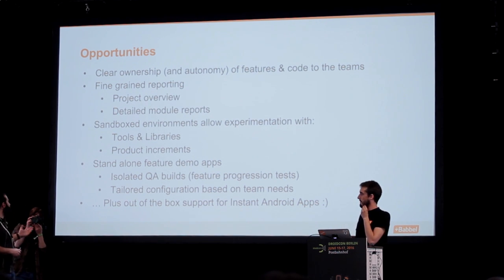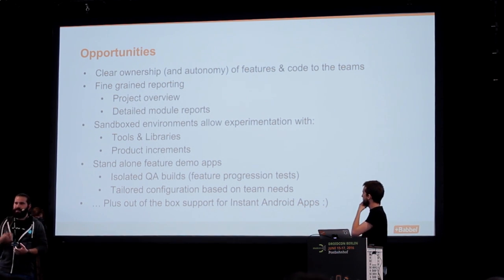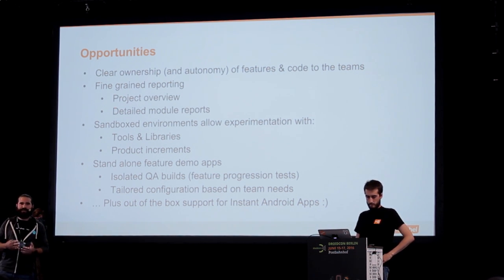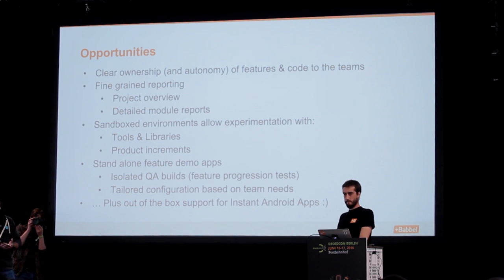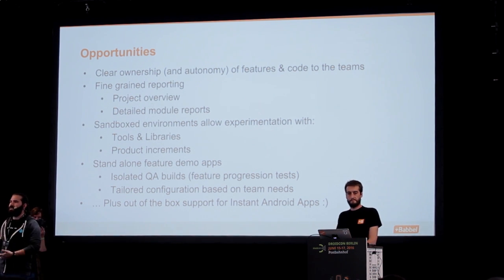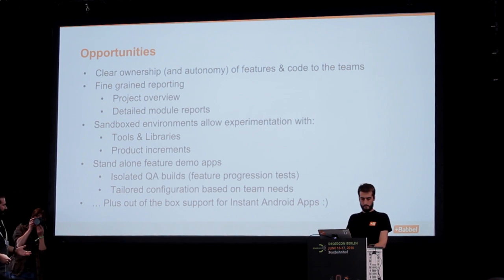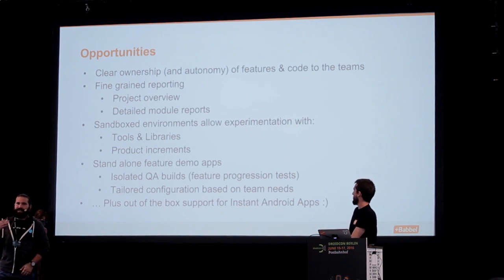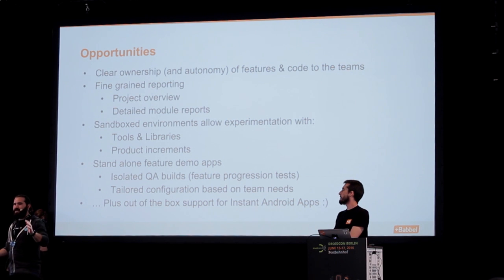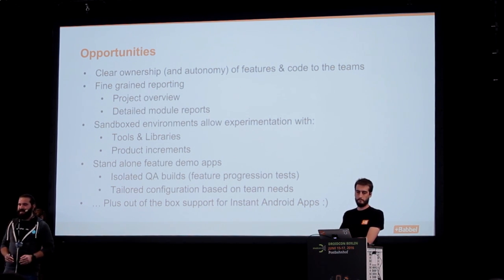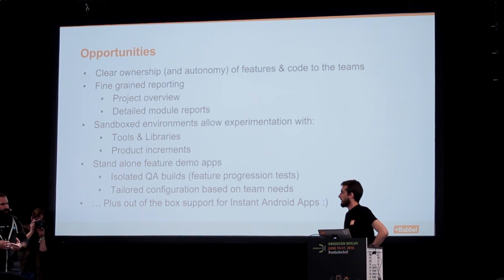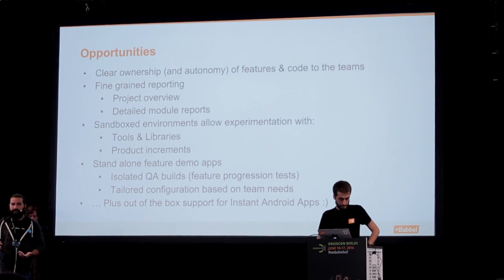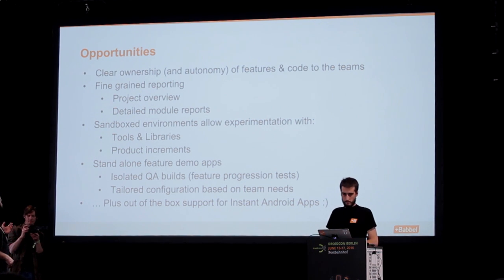What motivates us and keeps us going? From the beginning, we were able to give teams and developers clear ownership of code and features. That simplifies maintenance and iteration with the product. We also gained fine-grained reporting — a top-level project overview where anyone can check the latest build or receive an email summarizing quality and changes. That's very powerful. And detailed module reporting empowers developers to understand how their deltas affect the project, catching what goes wrong before it actually goes wrong.